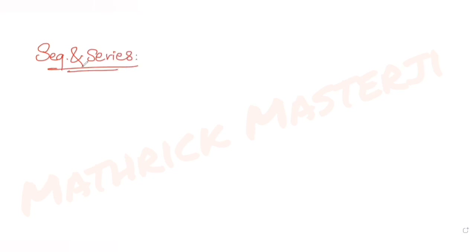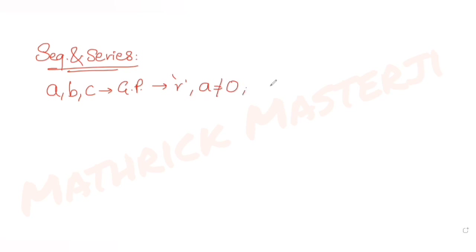Hi guys, I hope you are all doing well. Today's question is from the topic of sequences and series. The question tells us that a, b, and c are in geometric progression with common ratio r, where a is not equal to 0, and the common ratio r is between 0 and one-half.